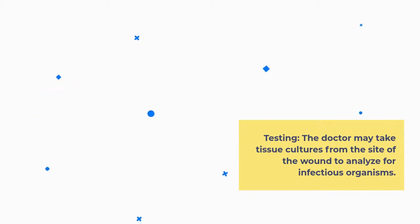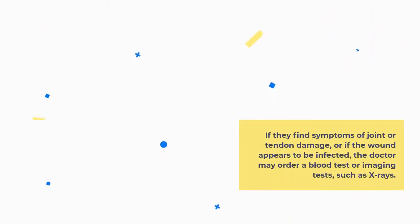Testing: the doctor may take tissue cultures from the site of the wound to analyze for infectious organisms. If they find symptoms of joint or tendon damage, or if the wound appears to be infected, the doctor may order a blood test or imaging tests, such as x-rays.